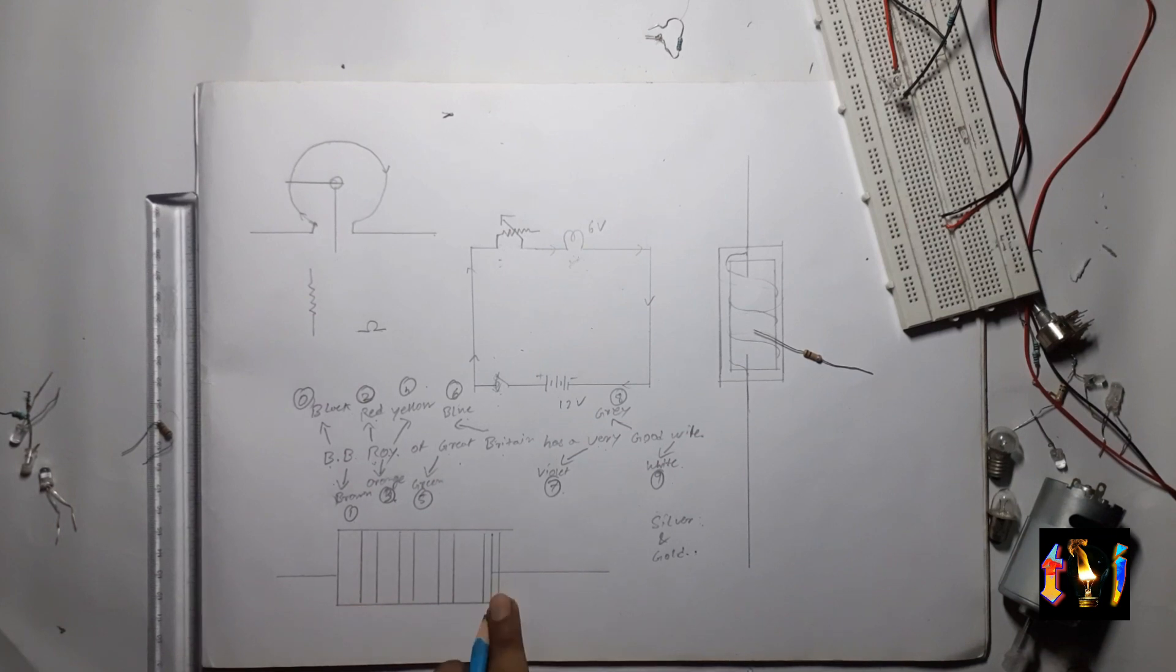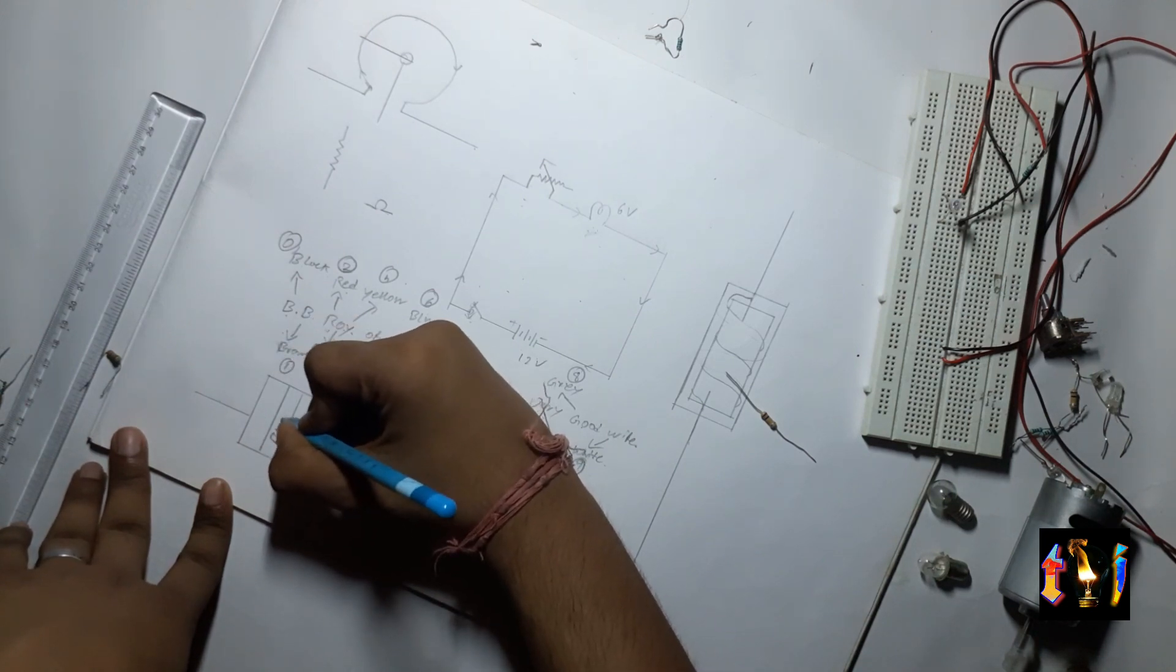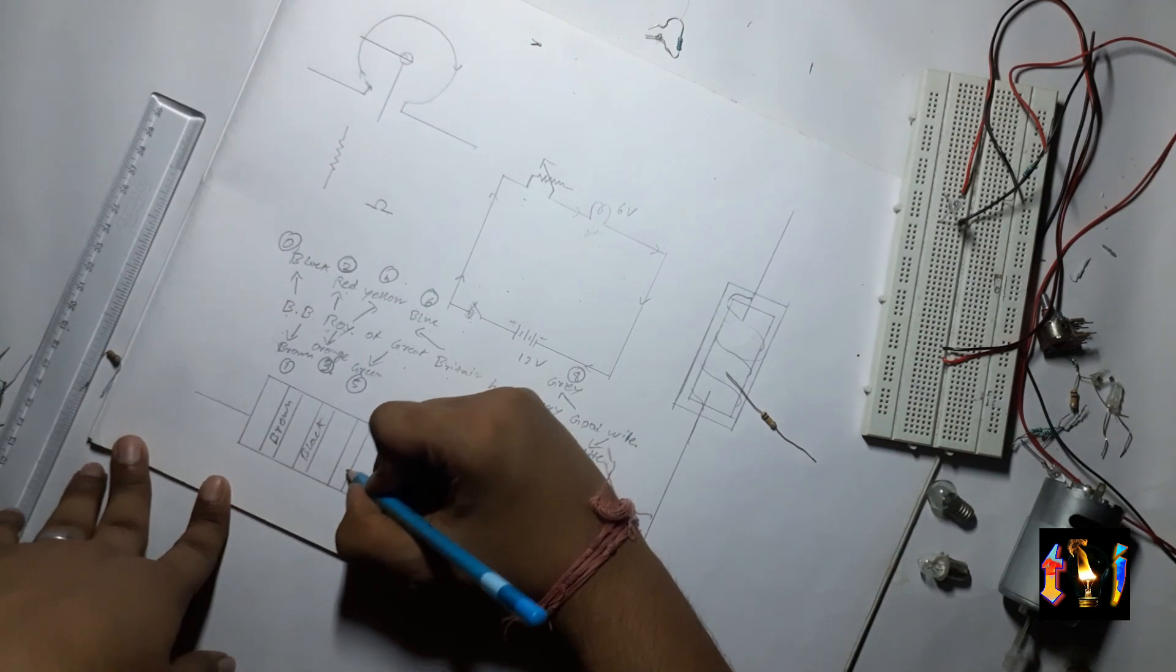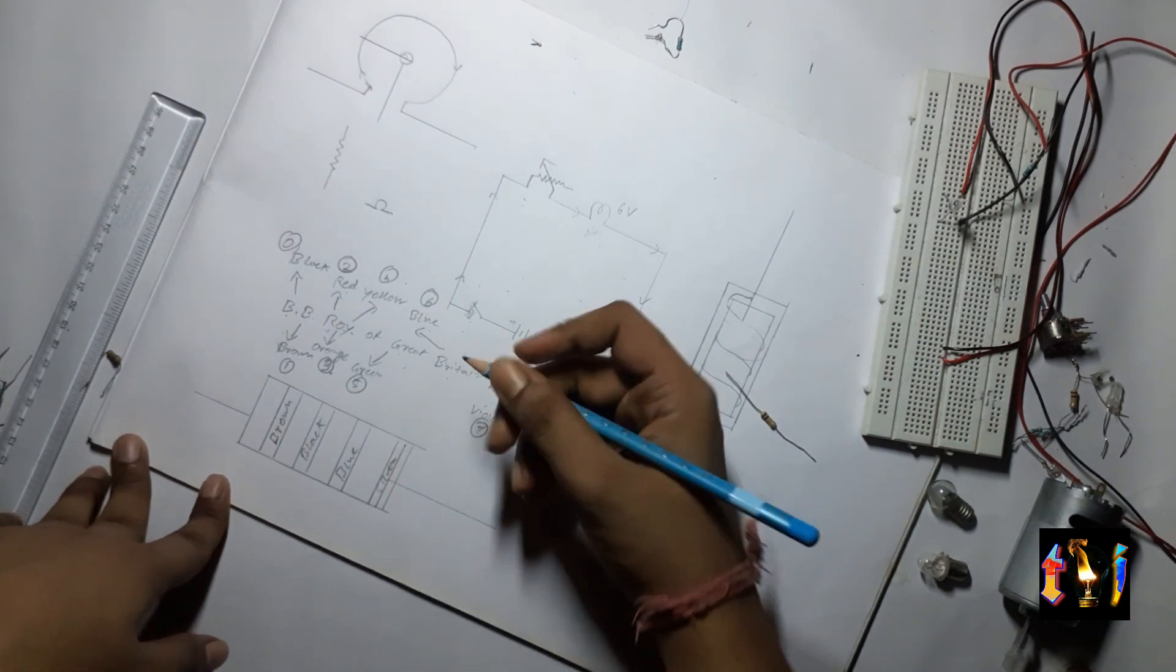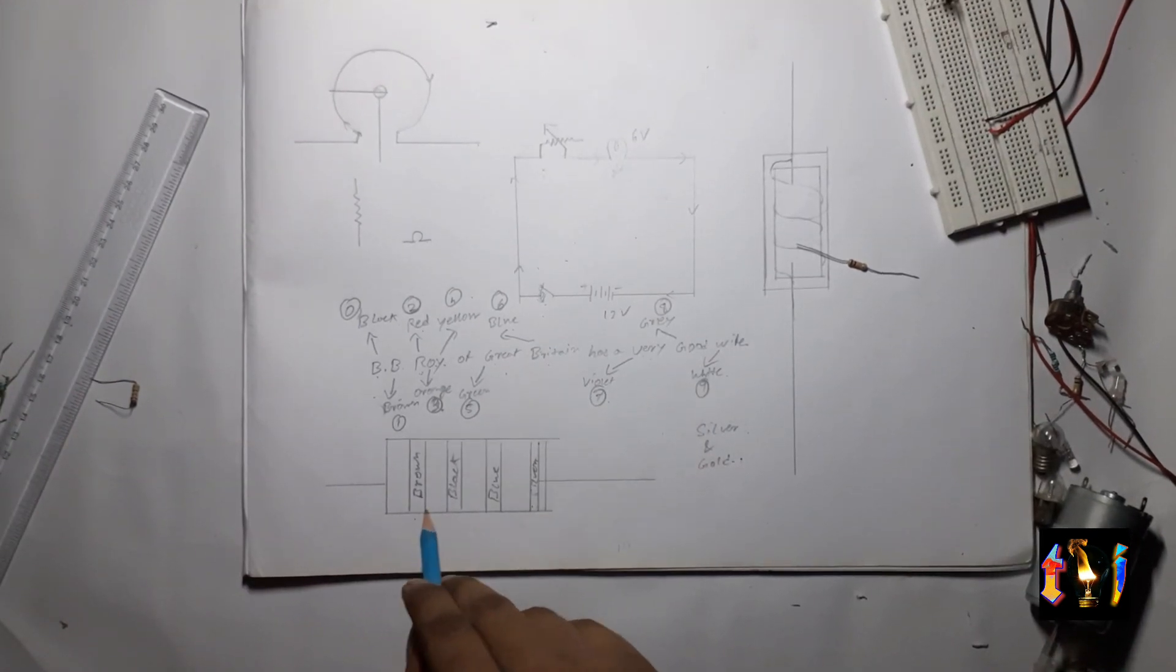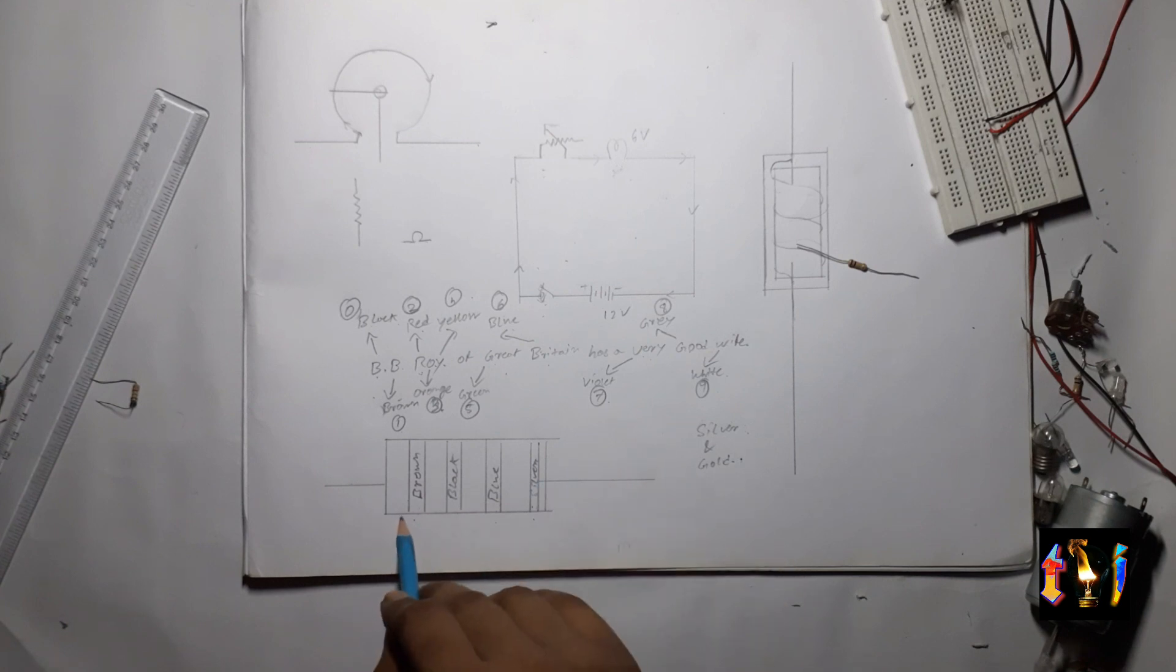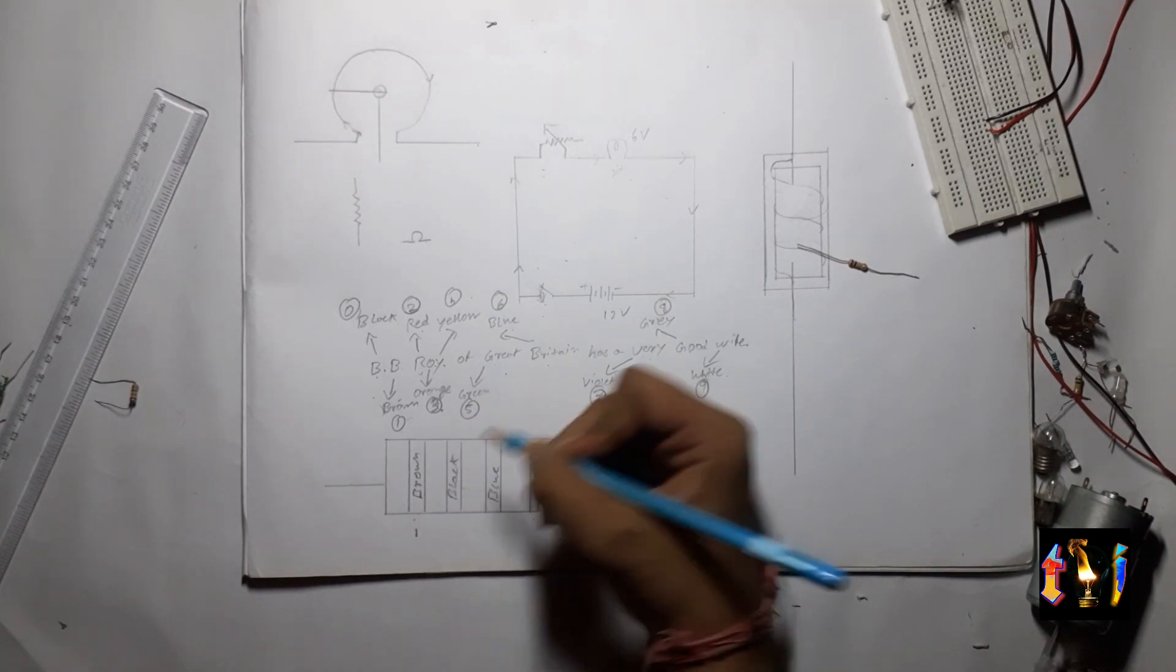Suppose this is a resistor with four rings. The first one is brown, the second one is black, the third one is blue and the fourth one is silver. So for now let's keep this silver ring aside and there are three rings. The first one brown which means one. So I will write here one. The second one is black which means zero.